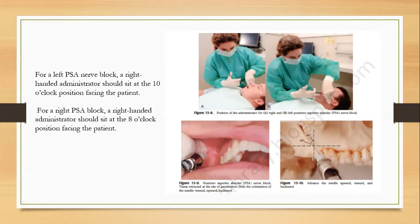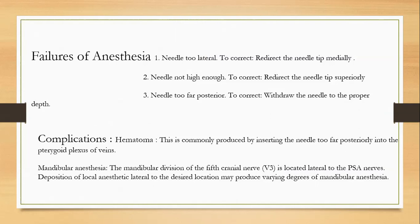Failures occur if the needle is too lateral, not high enough, or too far posterior. If the needle is too far posterior, you can enter the pterygoid plexus and hematoma can occur. Hematoma is a very common complication of the PSA nerve block, commonly produced by inserting the needle too far posteriorly, piercing the pterygoid plexus of veins. Sometimes mandibular anesthesia also occurs if the needle is not at the correct 45-degree angulation.